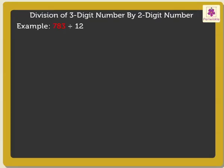Divide 783 by 12. There are five steps to simple division. Let us see these steps while finding the quotient.